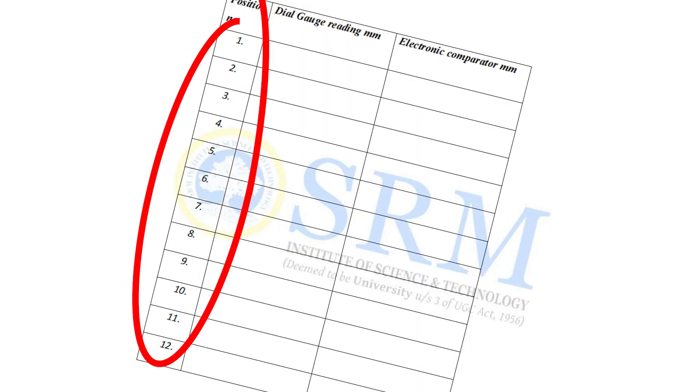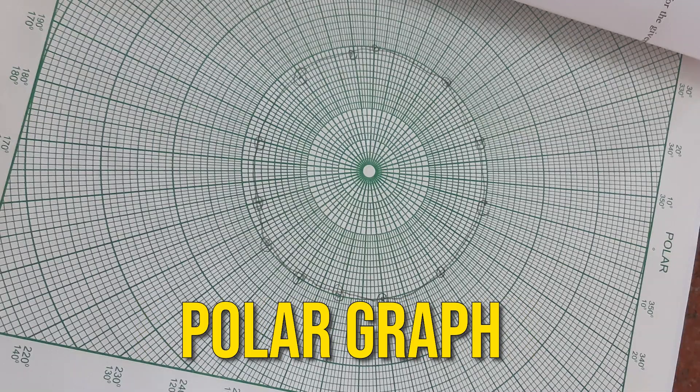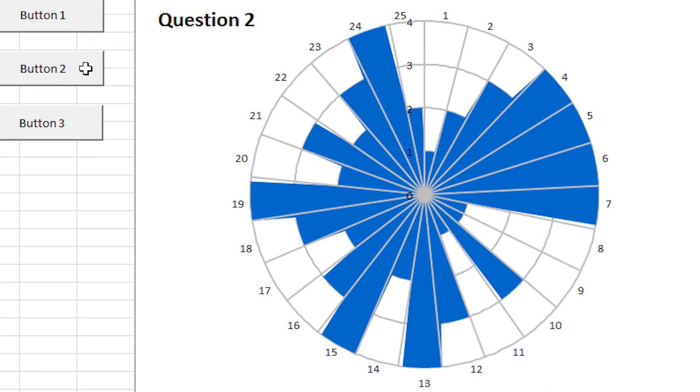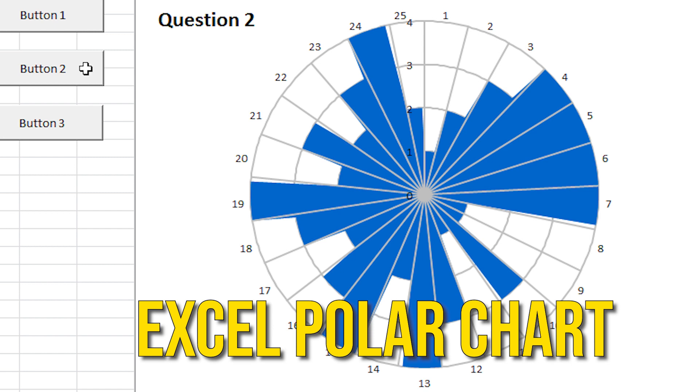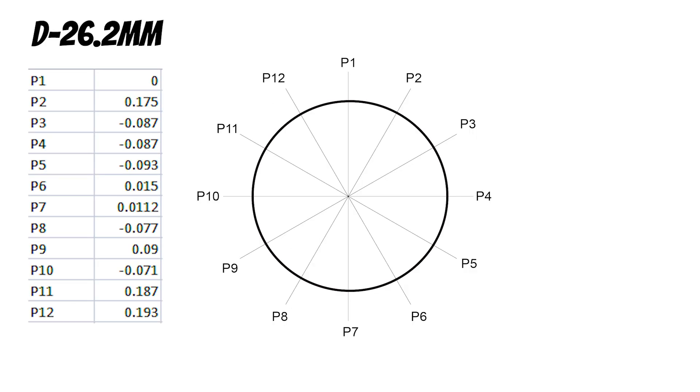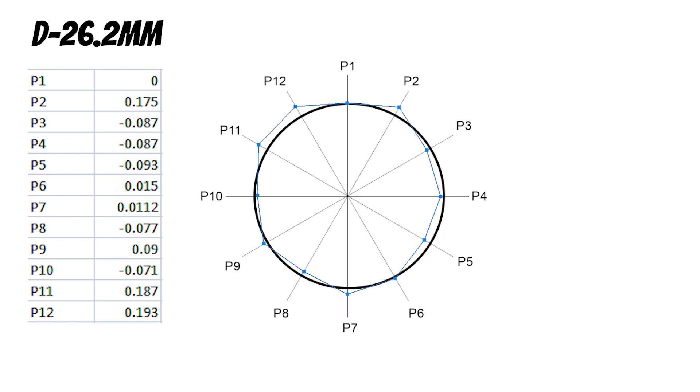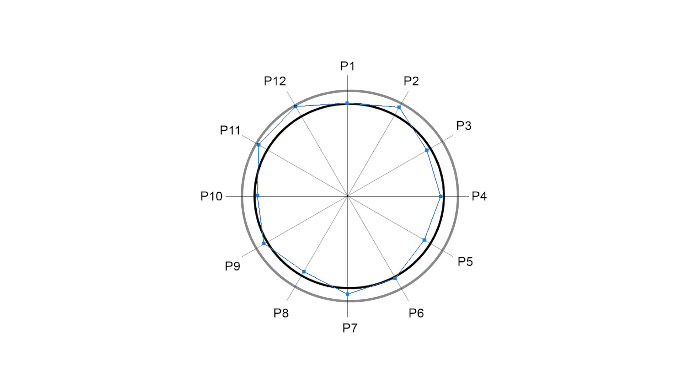After calculating all 12 positions, plot the values in a polar graph or Excel chart. First draw the master circle by considering the workpiece diameter. After that plot the deviations of the 12 positions. Now draw a circle on maximum deviation point and minimum deviation point. The distance between these two circles is called circularity error.